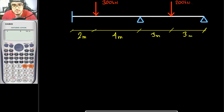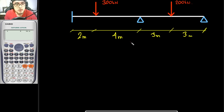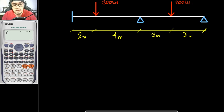For this problem, we would be determining the plastic moment capacity of this member. This is a 2-span continuous beam. If you would be solving a problem similar to this, what you would be doing is dividing this per span.